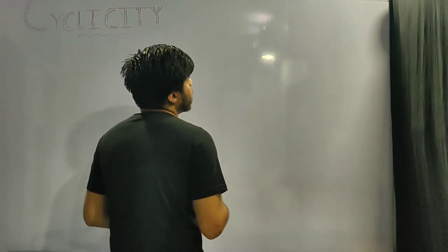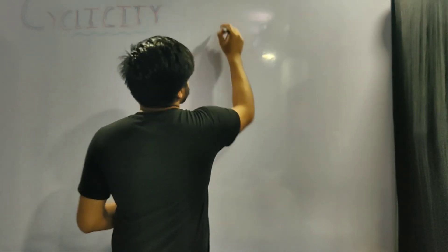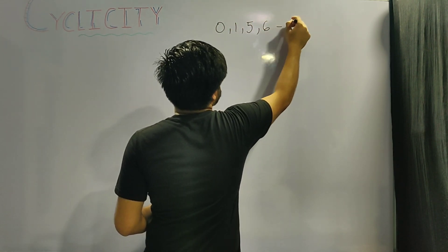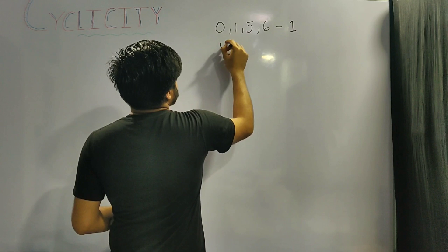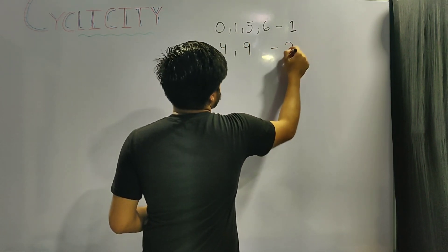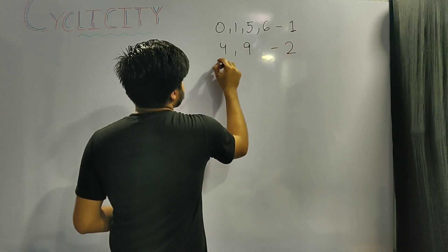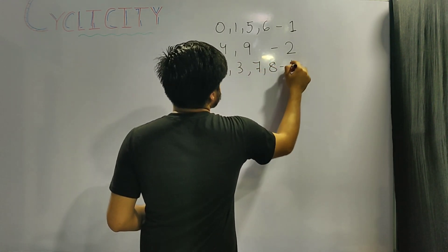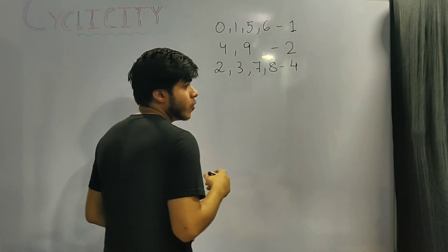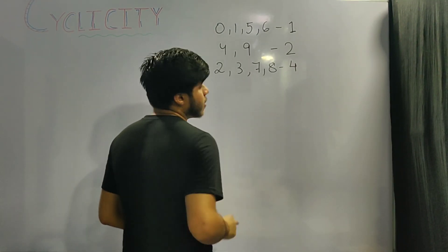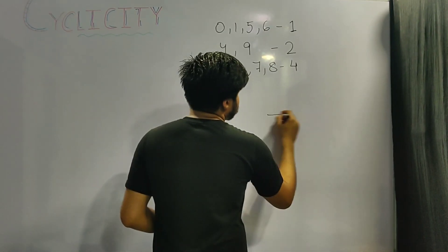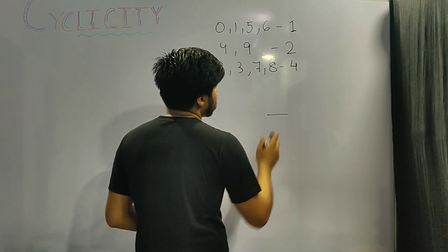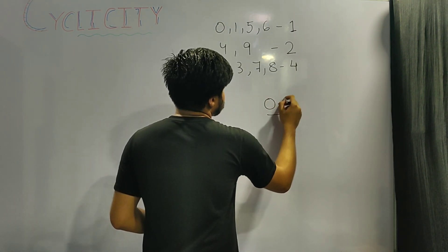To solve questions quickly, we need to remember the cyclicity of numbers. The digits 0, 1, 5, and 6 have a cyclicity of 1. The digits 4 and 9 have a cyclicity of 2. And the remaining digits — 2, 3, 7, and 8 — have a cyclicity of 4. If you're wondering why we only consider values from 0 to 9: since any digit can only have these 10 possibilities, we are only concerned with numbers from 0 to 9.